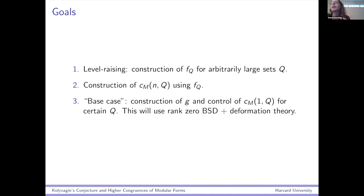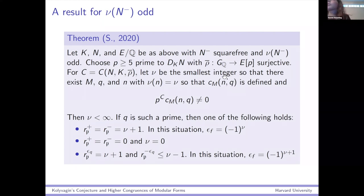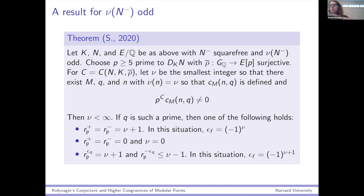This is where rank zero BSD is going to come in and some deformation theory is going to enter the picture. As a quick diversion: if N_minus has an odd number of prime factors, you could define classes like this whenever Q has an odd number of prime factors. You can get a non-vanishing result for this system as well, and in this situation you can also extract some data about the Selmer rank from the vanishing or non-vanishing of these points.